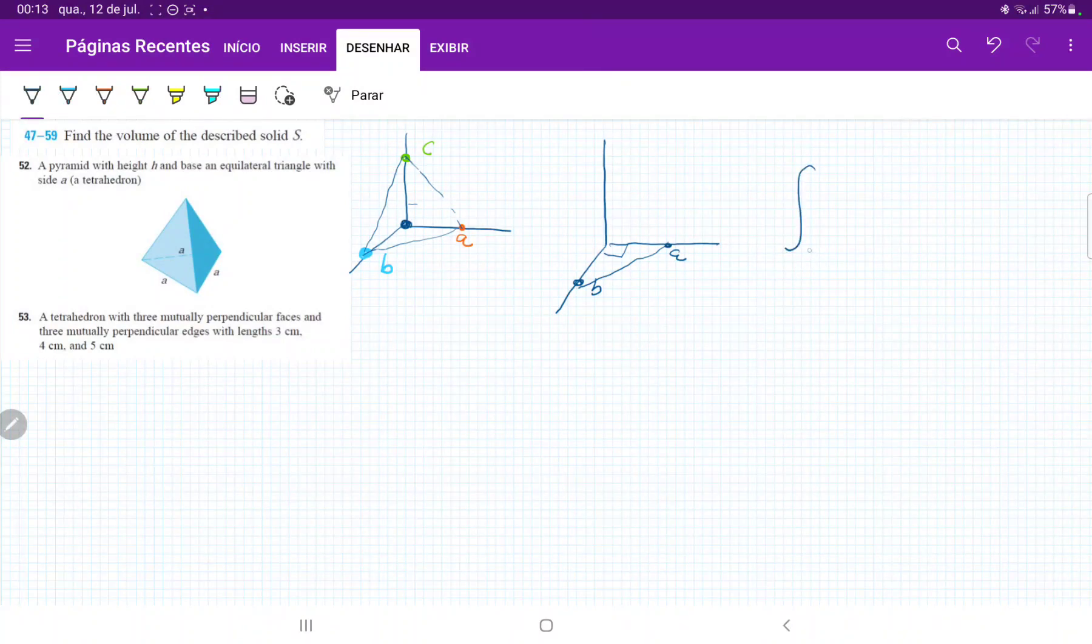So our integral is actually going to be the integral from 0 to this value of c. And for this one, because it says 3, 4, and 5, I'm just going to say that this is 5, this here is 4, and that is 3. So we're going to integrate from 0 all the way to 5.